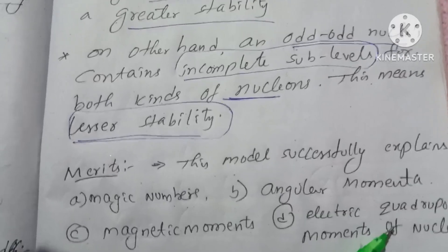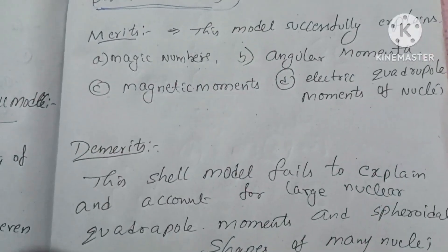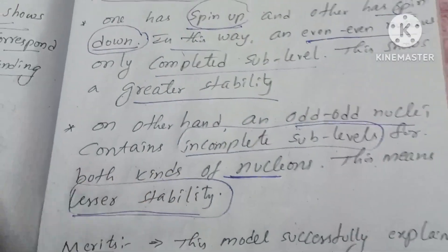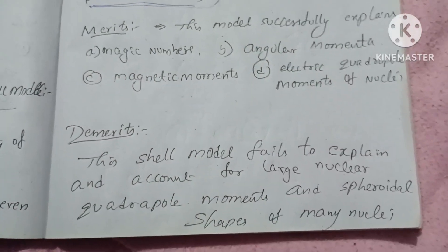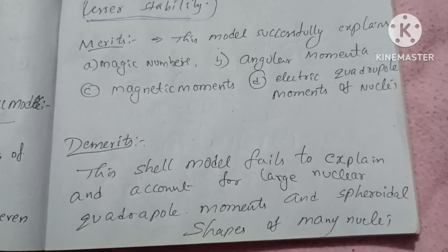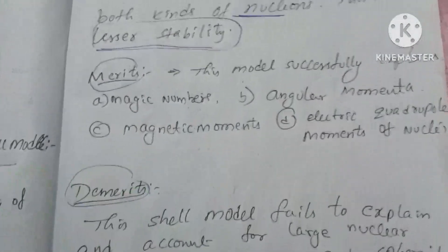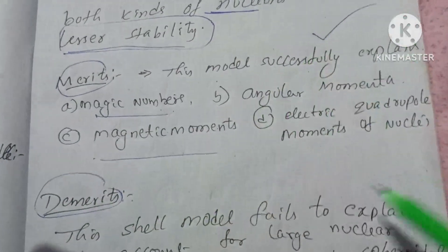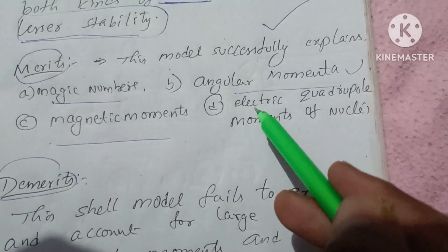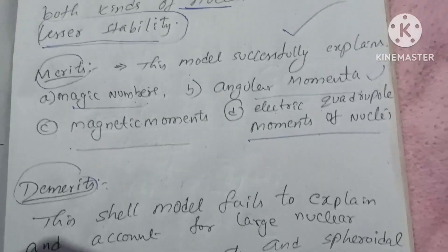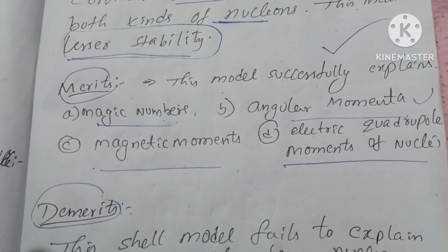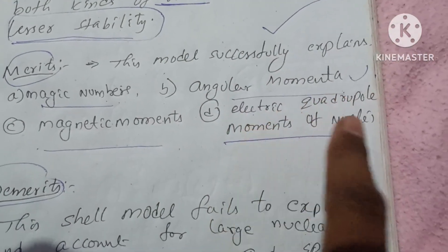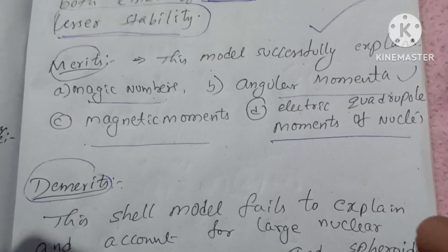The shell model successfully explains four key observations: magic numbers, magnetic moments, angular moments, and electric quadrupole moments of nuclei. Knowing these four points is very important for examination purposes.